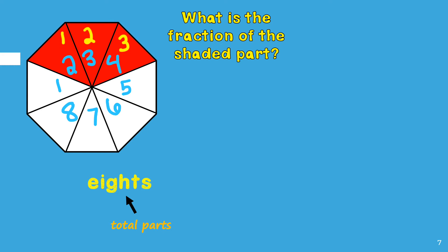Since we want to know the fraction of the shaded part, I will now count how many are shaded: one, two, three. There are three parts that are shaded or colored, so the first word for this fraction is three. Three represents the number of parts that are shaded. So what is the fraction of this shaded part? The answer is three eighths.